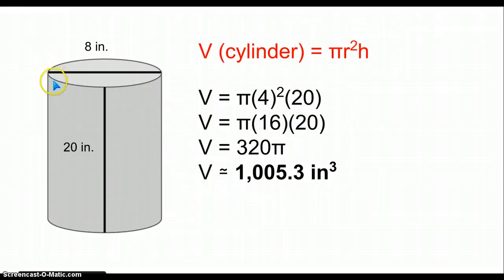For the body, I estimated that the height of the cat's body would be about 8 inches, and then the length of it would be maybe 20. And then I got a rough estimate of about 1,005.3 inches cubed, because it's volume, the volume of a cylinder.